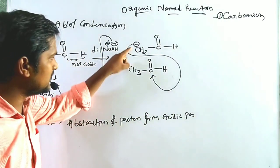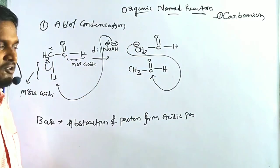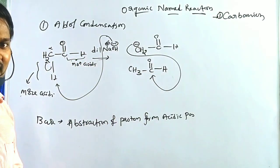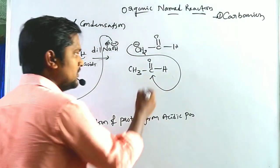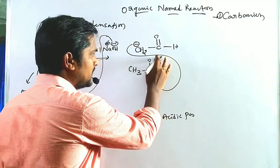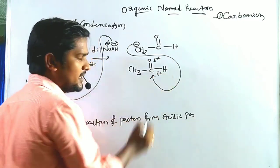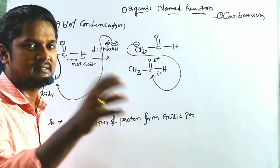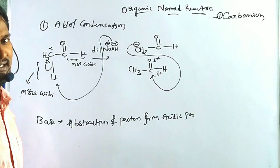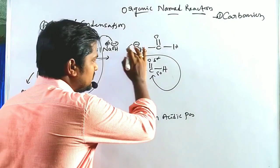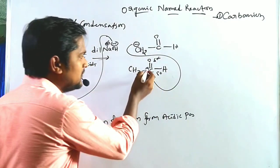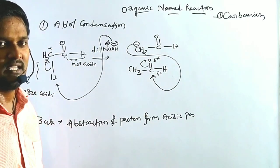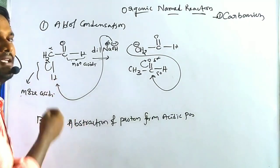The carbanion (negative charge) attacks the electrophilic center of the carbonyl group. Oxygen is more electronegative, so it carries the negative charge, while carbon is less electronegative and carries the partial positive charge — making it the electrophilic center. The nucleophile attacks the carbonyl carbon, and the bonded electrons shift toward oxygen, forming an oxyanion (O⁻).